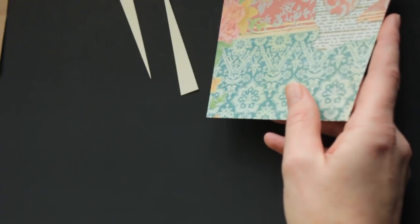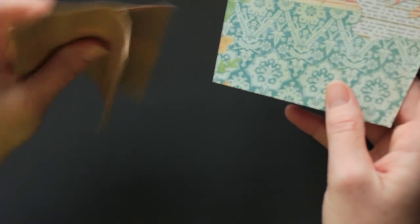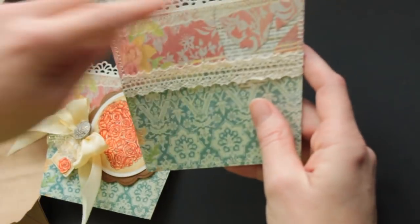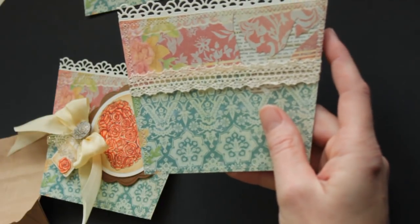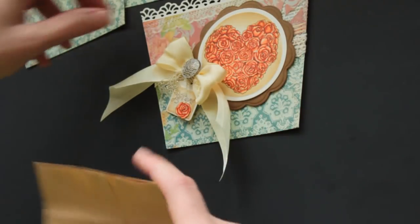Now, before you adhere it to your lunch bag base, decorate it any way you want. I used a full crochet border from My Favorite Things and some lace from May Arts. Now, all you need is some strong adhesive.